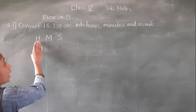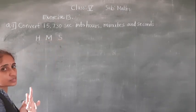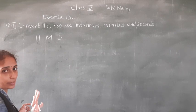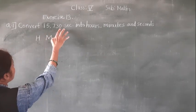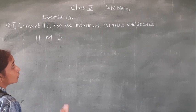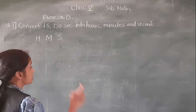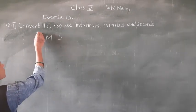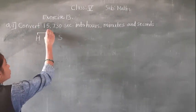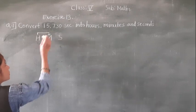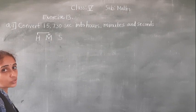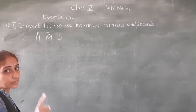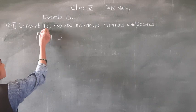It is easy to keep in mind — HMS. Now see: these are seconds. Seconds we want to convert into hours, minutes and seconds. Hours convert into minutes — what we have to do? We multiply by 60.